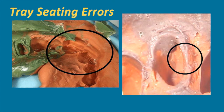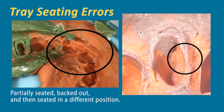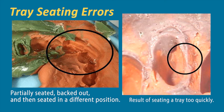Some other tray seating issues: on the left, a partially seated impression that backed up and was seated again gives two different positions—improper full arch seating. On the right, a result of seating too fast. Also, look at the labial part—you don't see a good blend between the heavy body and the light body, suggesting timing was off on that impression material.